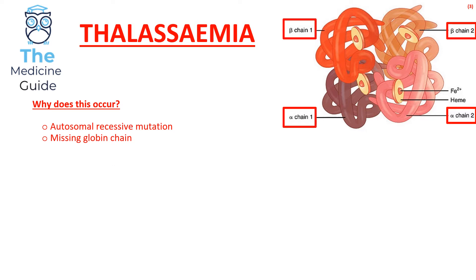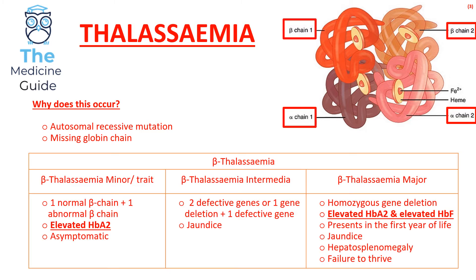Beta thalassemia is when there is a missing beta chain in the haemoglobin molecule. Patients can suffer from beta thalassemia minor, also known as beta thalassemia trait, where they have one normal and one abnormal beta chain. These patients are usually asymptomatic and have an elevated HbA2 — something that definitely crops up in exams.